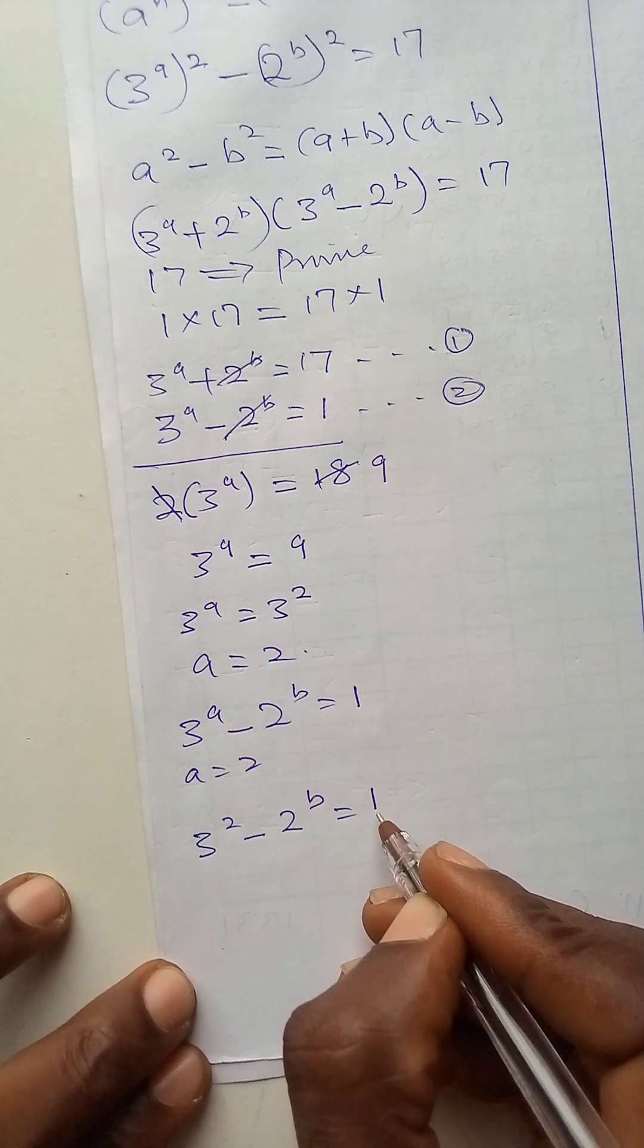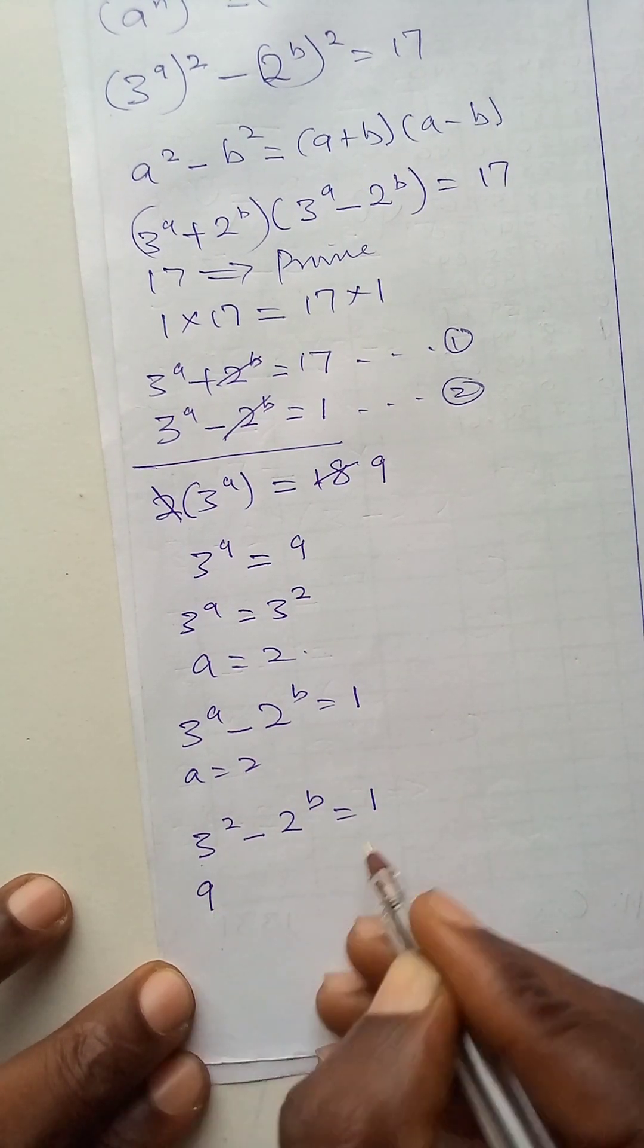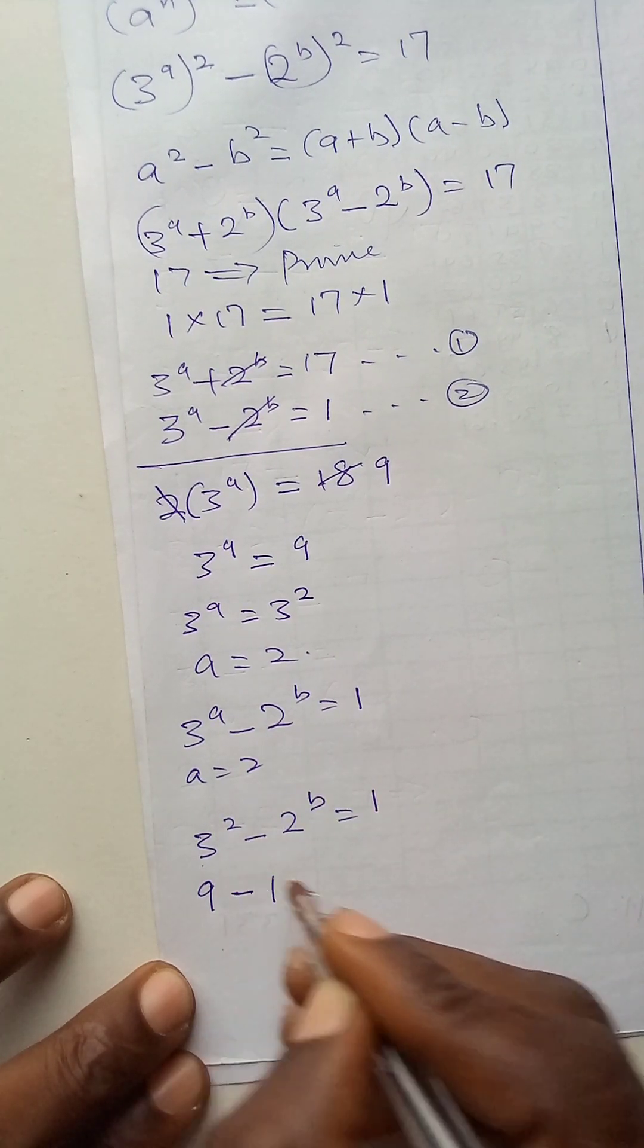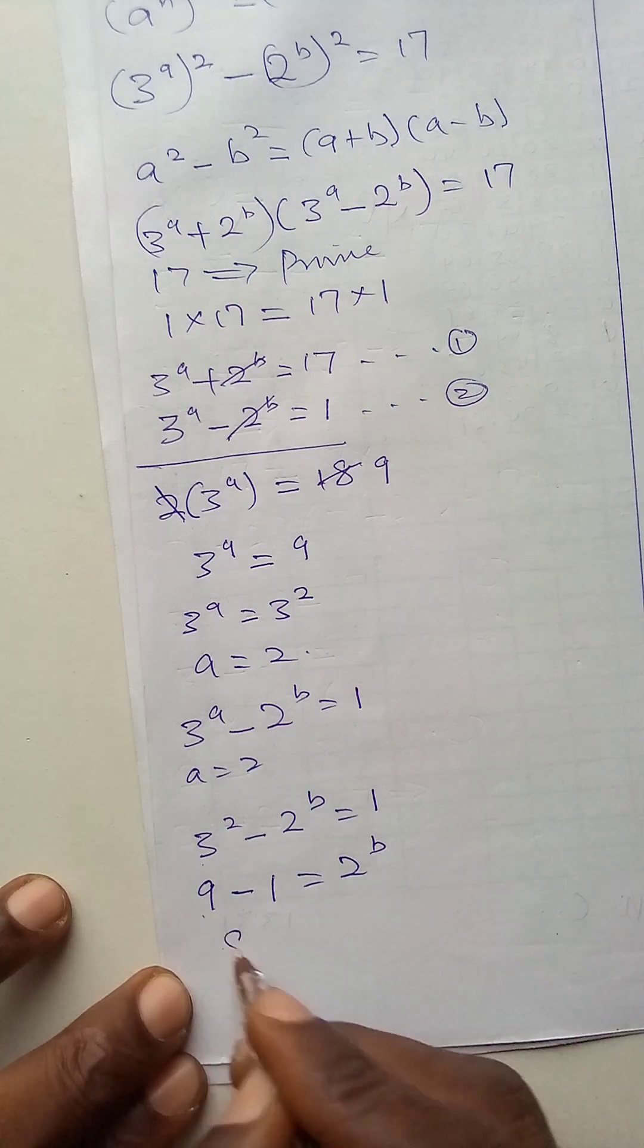Now, let me collect like terms. 3 to power 2 is 9. Then, minus 1, this one comes here, equals to 2 to power b. 9 minus 1 is 8.